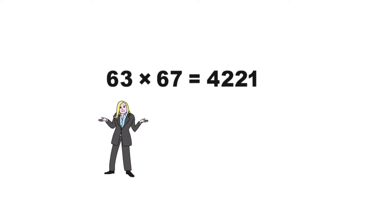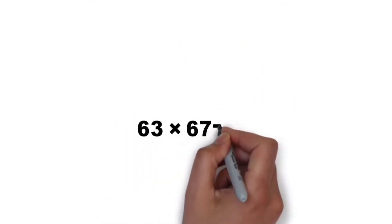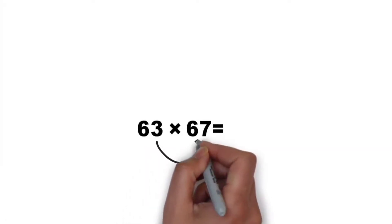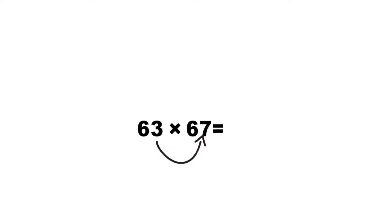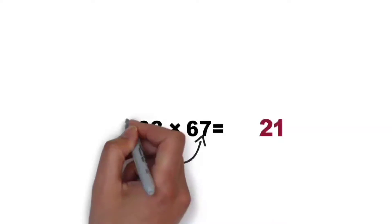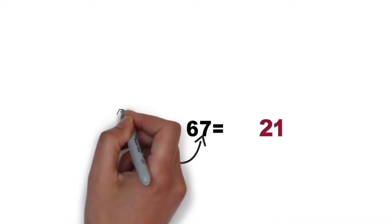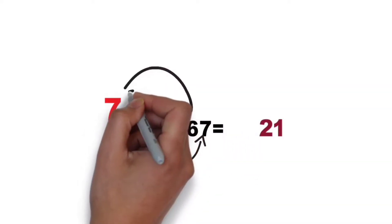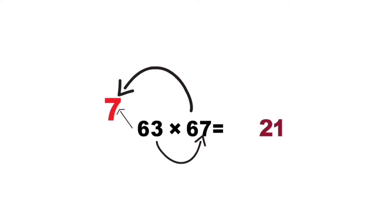For this multiplication, firstly 3 times 7, this is 21. Secondly, 6, next number is 7, so 7 times 6 equal to 42. So answer is 4221.